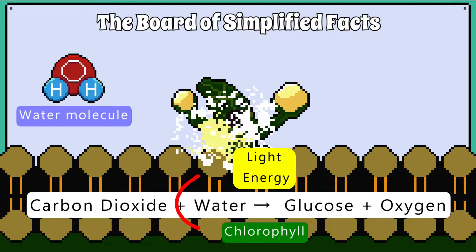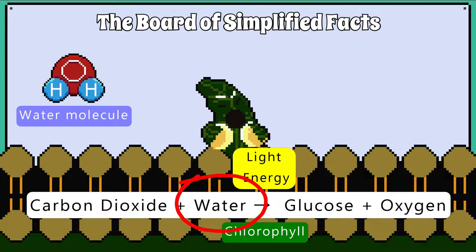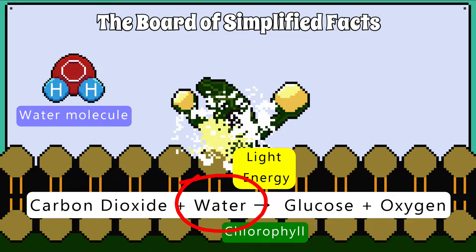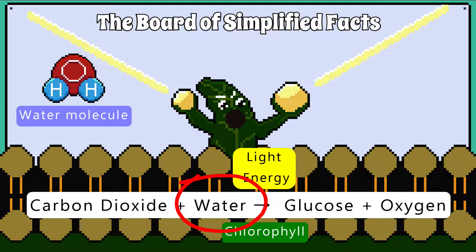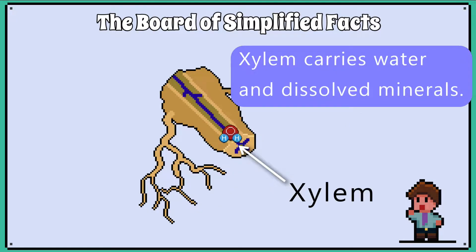We also know that water plays an important role in photosynthesis, as it is one of the reactants in the reaction. Without water, photosynthesis cannot happen. Roots absorb water and it is carried to other parts of the plant by vessels called xylem. The water will also contain dissolved mineral ions like potassium.